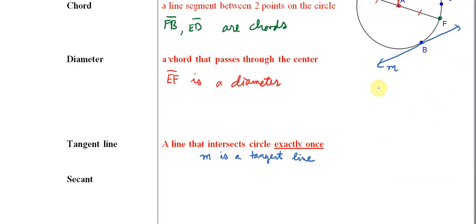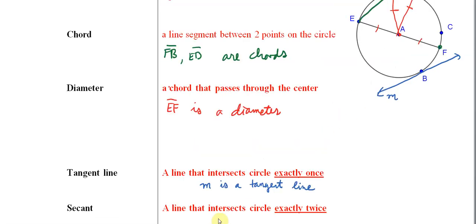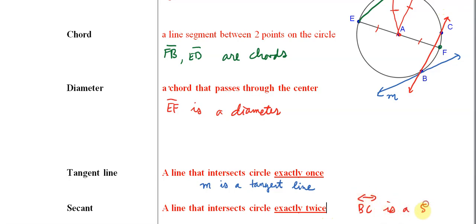Our final definition is a secant, which is a line that touches the circle exactly twice. There are lots of ways that we can construct secant lines. One way would be a line going from one point through to another on the circle. We can say that BC is a secant line of the circle.